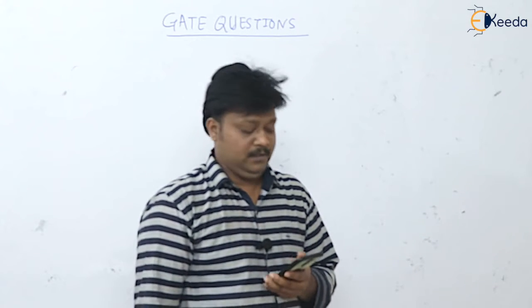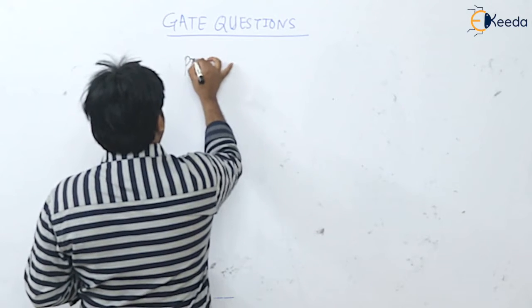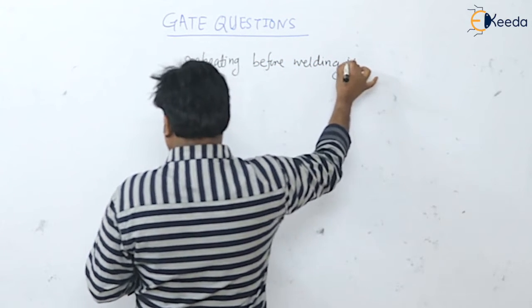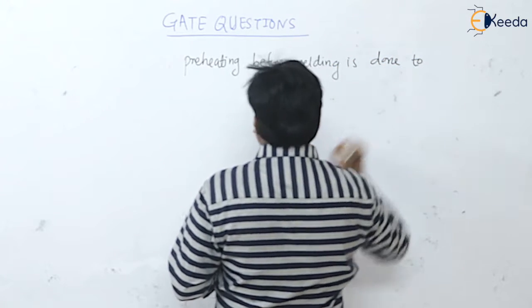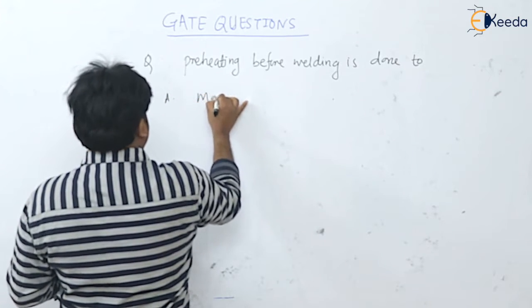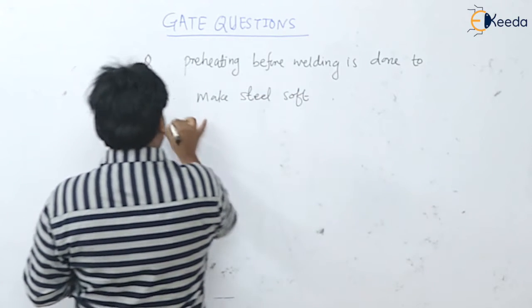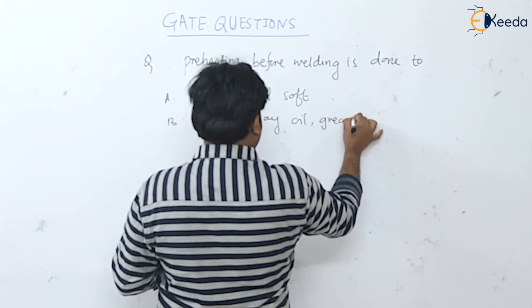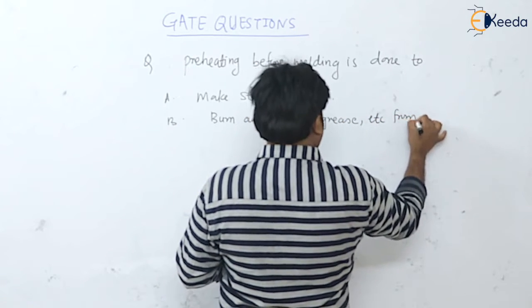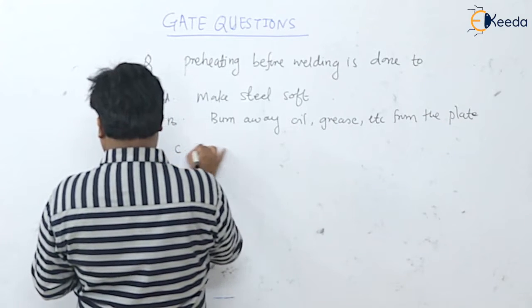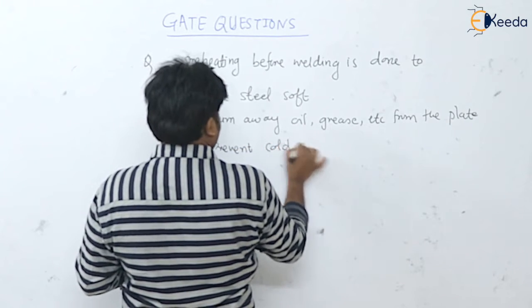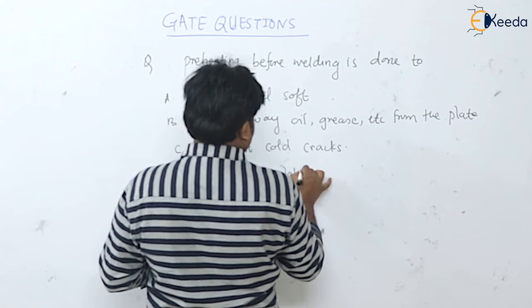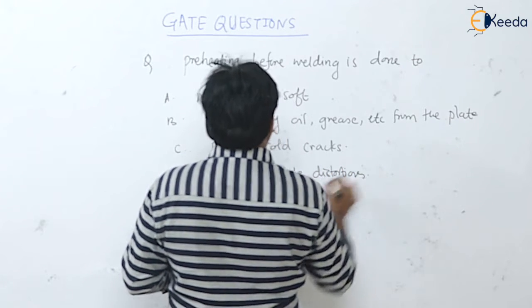Next question: preheating before welding is done to — options are: make steel soft, burn away oil, grease, etc. from the plate, prevent cold cracks, and prevent plate distortions.